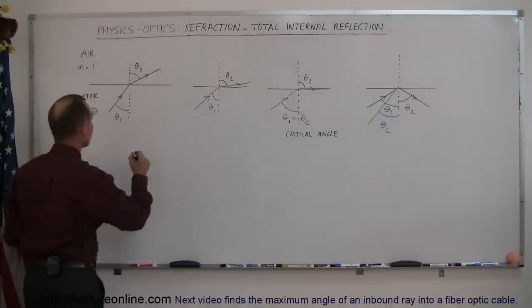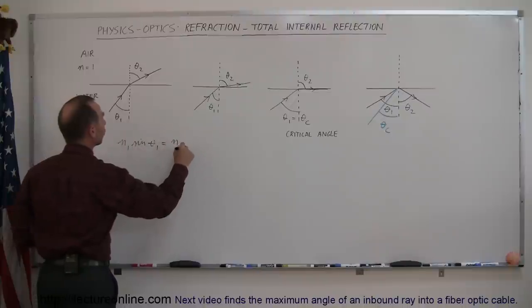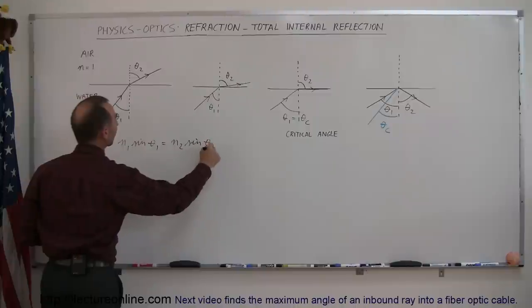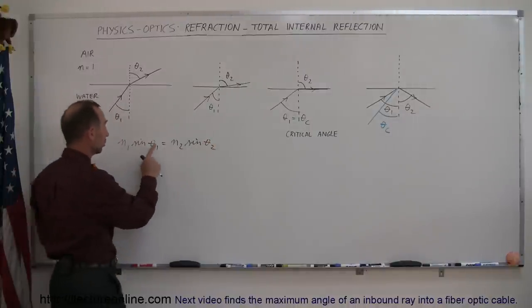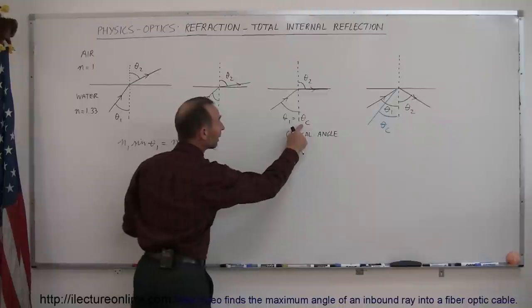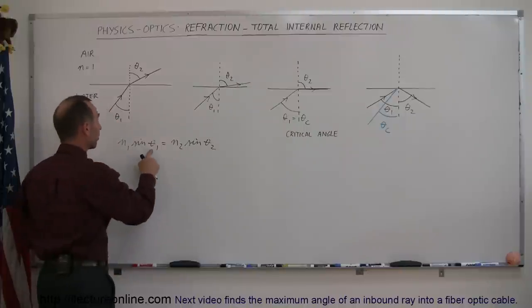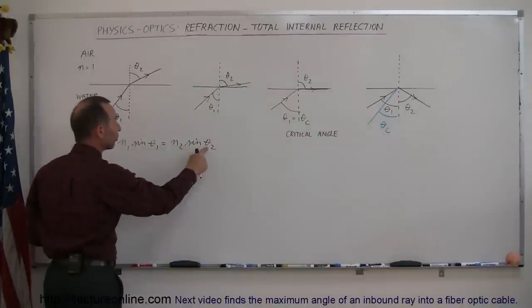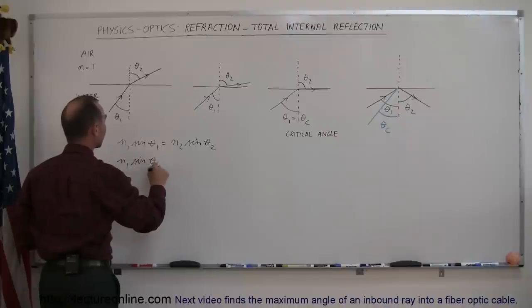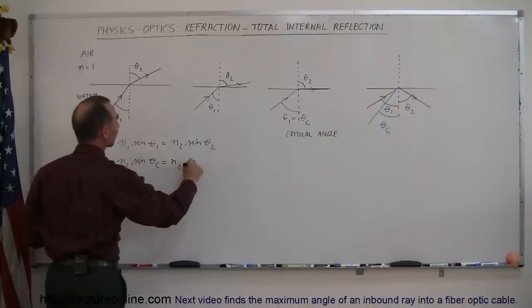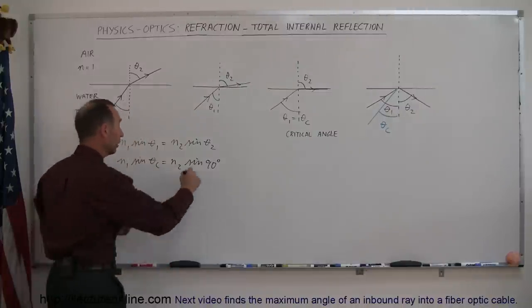So using Snell's law we can say that N1 sine of theta 1 is equal to N2 sine of theta 2. And then we know that if theta 1 is equal to the critical angle then theta 2 will be equal to 90 degrees. So let's replace theta 1 by the critical angle and theta 2 by 90 degrees and we get N1 times the sine of the critical angle is equal to N2 times the sine of 90 degrees. And of course the sine of 90 degrees, that's equal to 1.